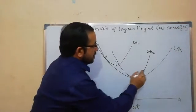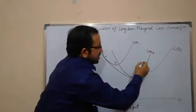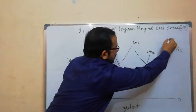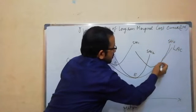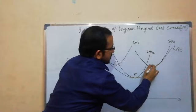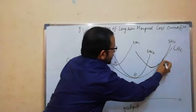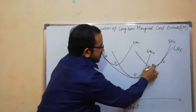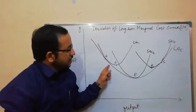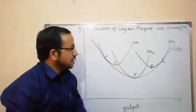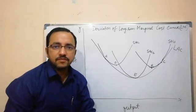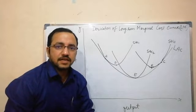Now here we will draw SAC3, which will be tangent to the LAC at the rising portion at point C, and the minimum point of SAC3 is R. So here we have drawn the long-run average cost curve LAC with the help of SAC1, SAC2, and SAC3. We know the relationship between average cost and marginal cost, which we have already discussed in our previous video.